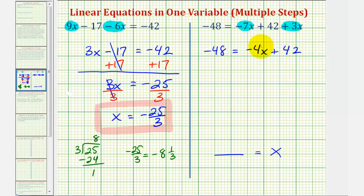For the next step, we want to isolate the variable term on the right side, so we want to undo this addition or perform the opposite operation on both sides. The opposite of plus 42 would be minus 42, so we'll subtract 42 on both sides of the equation. Notice plus 42 minus 42 is zero, so on the left side, we have negative 48 minus 42, that's negative 90, and on the right side, we have negative four x.